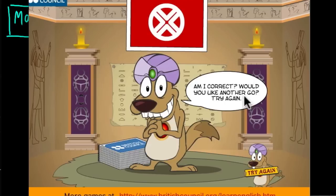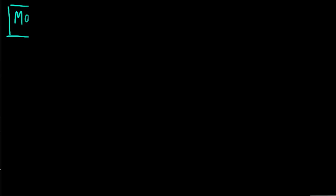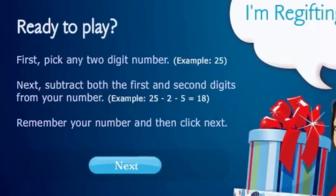Now let me show you another version. Another one is called Regifting Robin, different presentation but same trick, same basic idea. You want to play guess the regift? I'm up for the challenge. First, pick any two-digit number. As an example, I'll pick 25. Once you've picked a number, subtract both the first and second digits from your number.